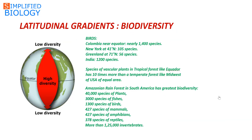An example of latitudinal gradient: Colombia, which is near the equator, has nearly 1,400 species of birds. As we move upward, New York, which lies at 41 degrees north, has 105 species, while Greenland at 71 degrees north has just 56 species. So as we move from the equator towards the poles, species diversity of birds decreases. India has 1,200 species of birds.